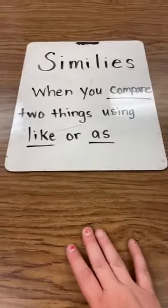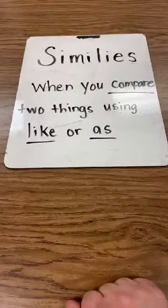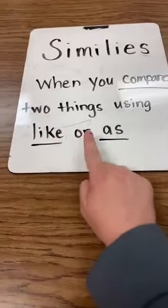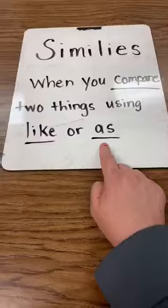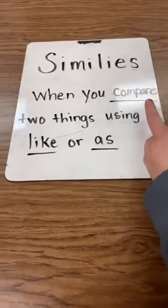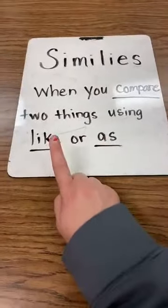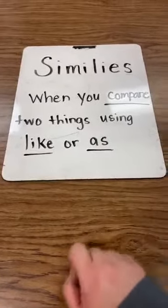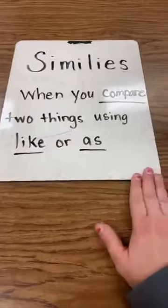Similes are when you compare two things using the words like or as. So your keywords for similes: they compare two things with the words like or as. So if you see that, it's a simile.